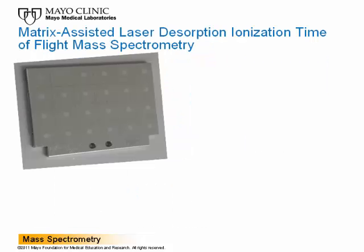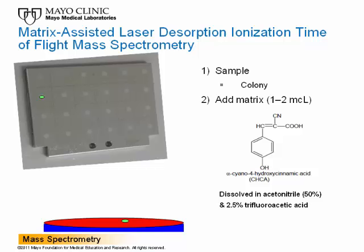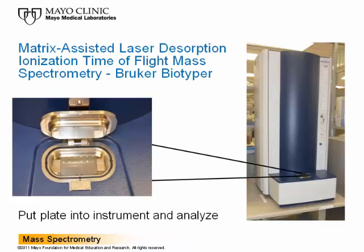I will first go over how MALDI-TOF mass spectrometry is practically done in the clinical laboratory starting from a colony. There are several systems available. I will overview the Bruker Daltonics system, the system with which I have the most experience. A colony may be picked directly from a plate and then smeared onto a target plate. Then, 1 to 2 microliters of a matrix consisting, for example, of alpha-cyano-4-hydroxycinnamic acid dissolved in acetonitrile and trifluoroacetic acid is added and dried on the plate. A 24-spot target plate can be prepared and analyzed in under an hour, equating to approximately 2 to 3 minutes per sample.